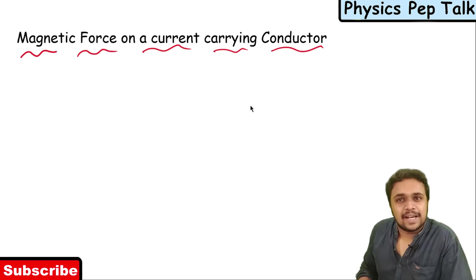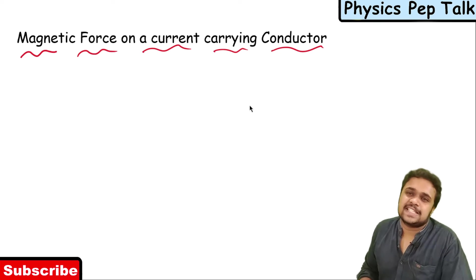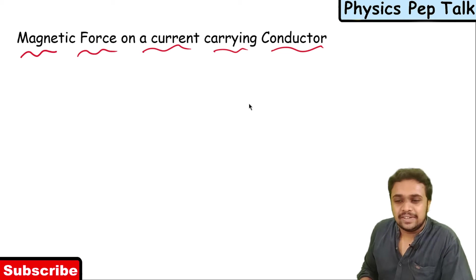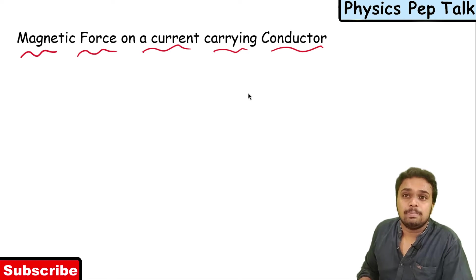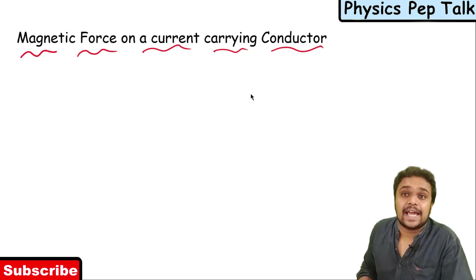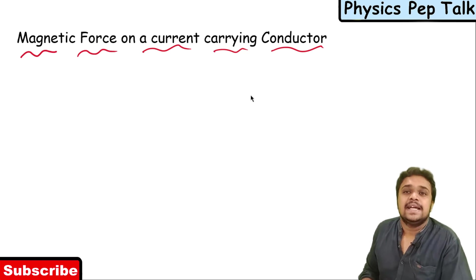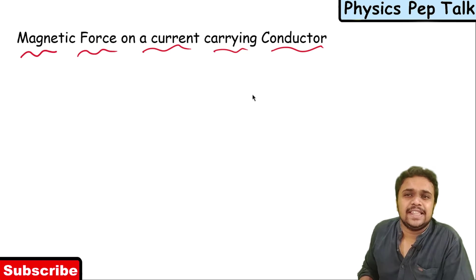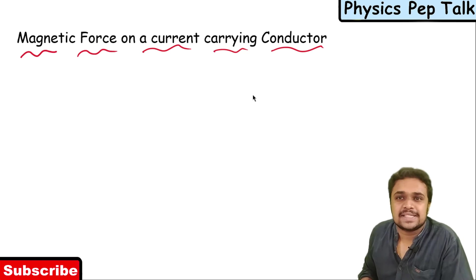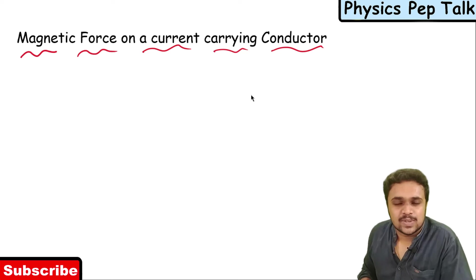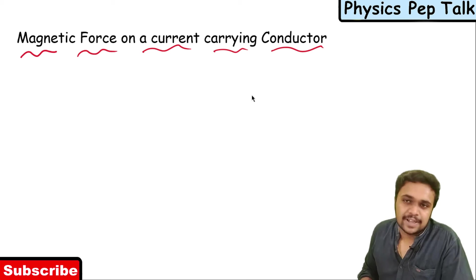Hello students and welcome to Physics Pep Talk. This video is about the magnetic force on a current-carrying conductor derivation. Usually 3 to 5 marks are awarded for this topic.